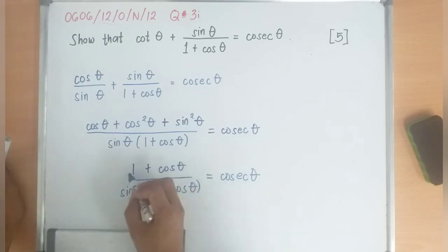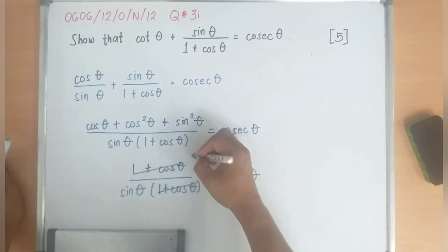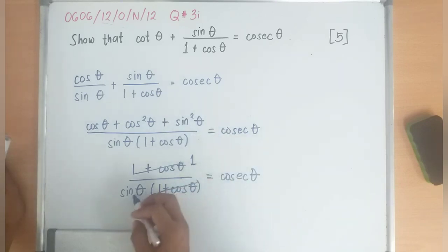I can cancel that out, and I will be left with 1 over sine theta, which equals cosecant theta.